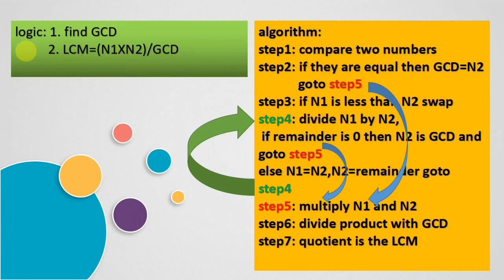This process is repeated until we get remainder 0, meaning until we find the GCD. After finding the GCD, step 5 is to multiply N1 and N2 — both numbers — and divide that product with the GCD. Whatever the quotient, that is equivalent to the LCM. This is the algorithm; now we'll see the program.